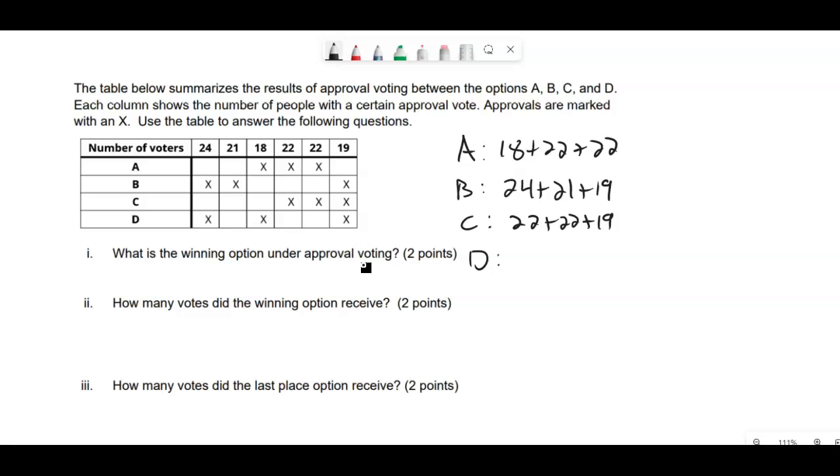And D, so where these are coming from, D got 24, 18, and 19. So then use your calculator, add these up.